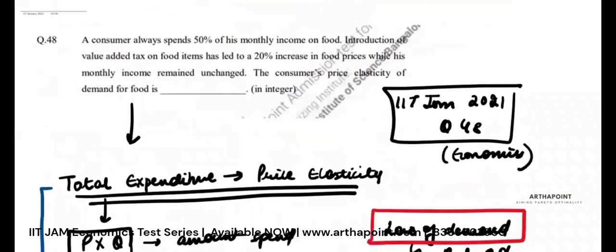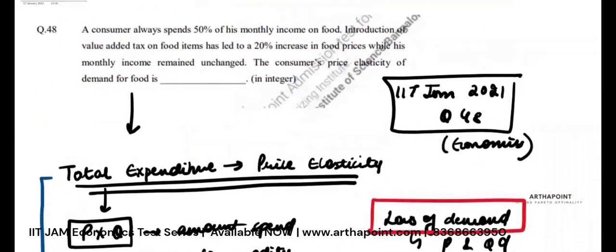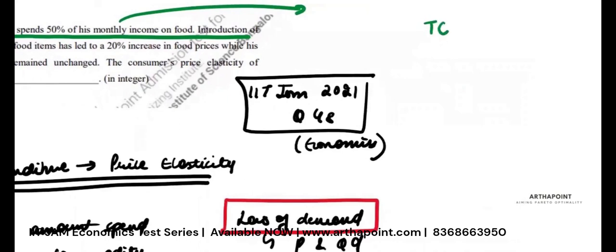Now, let's go to the question. It says a consumer always spends 50% of his income on food. So my expenditure is always 50% of my income. If my income is 100, my expenditure is always 50 rupees.